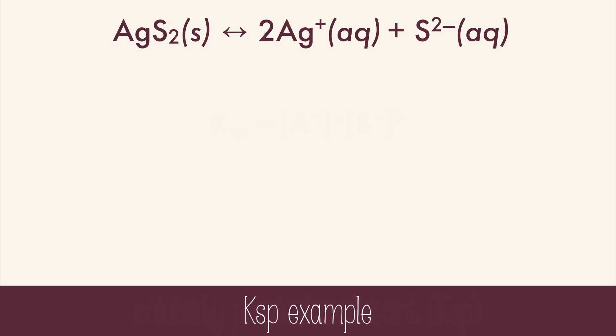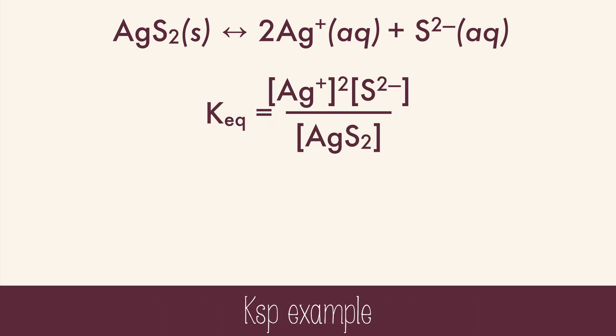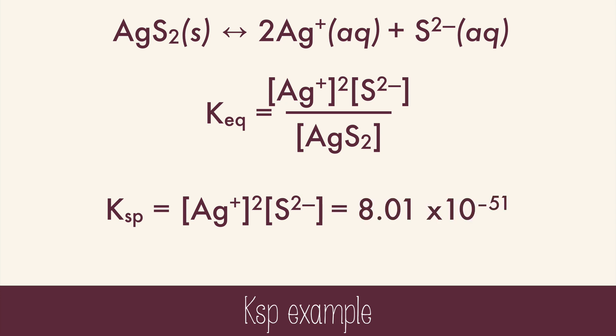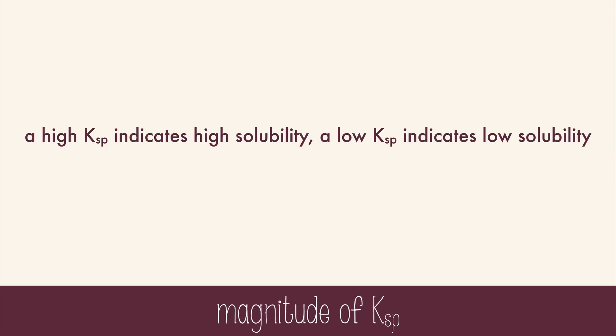Here's a dissociation equation for silver sulfide. It's considered to be insoluble, but let's see why. This is what the equilibrium expression for the equation would look like. A Ksp is only the product of the aqueous chemicals, so the Ksp of silver sulfide ends up being 8.01 times 10 to the negative 51, which indicates that this is a very, very insoluble compound because that number is so small. A high Ksp indicates high solubility, and a low Ksp indicates low solubility.